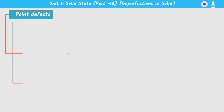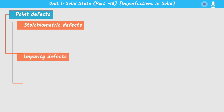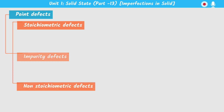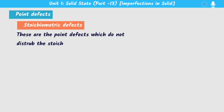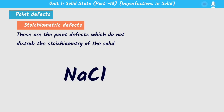Point defects are classified into three types. The first is known as stoichiometric defects. Stoichiometric defects are defined as point defects that do not disturb the stoichiometry of a solid. For example, in sodium chloride the formula is NaCl, meaning the ratio of sodium to chloride is one to one.